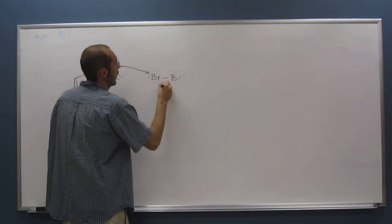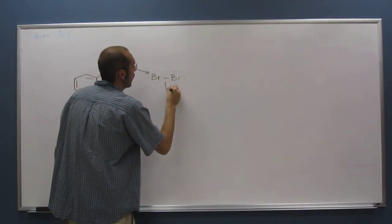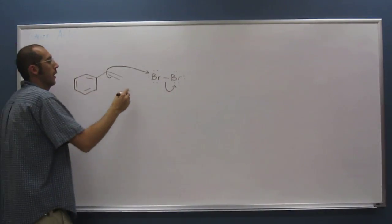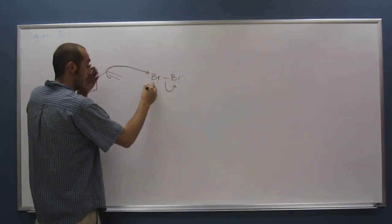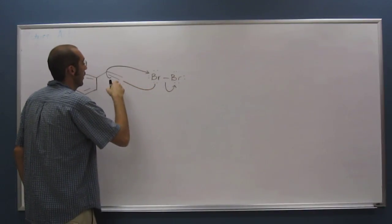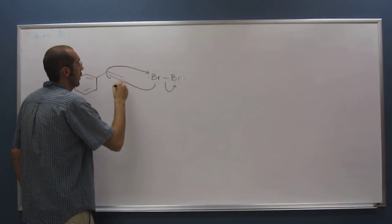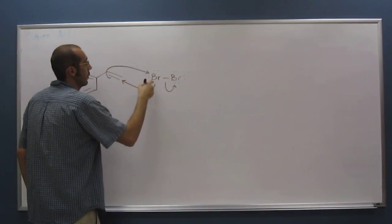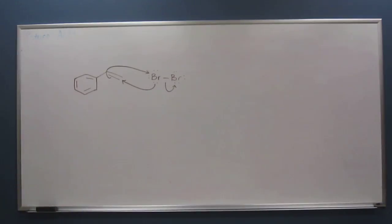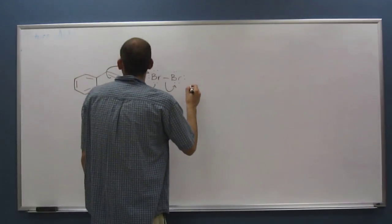And that's going to make that Br-Br bond break. And then, of course, this is a three-arrow mechanism. So as this developing positive charge here develops, that Br is so big that it just attacks that double bond from the other side as well.